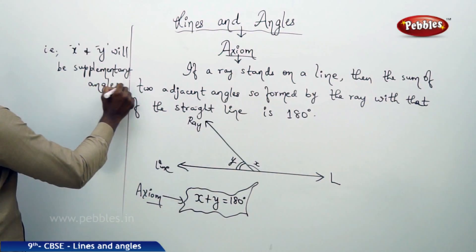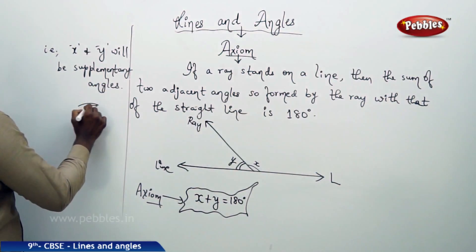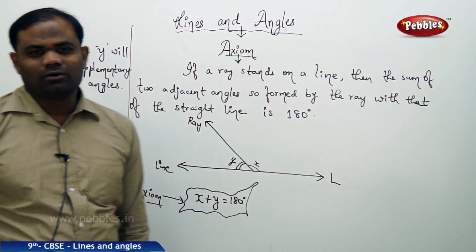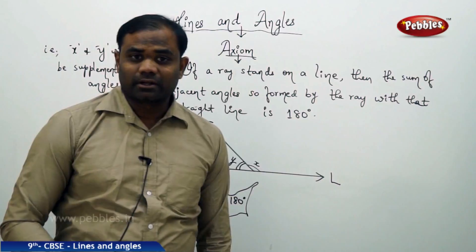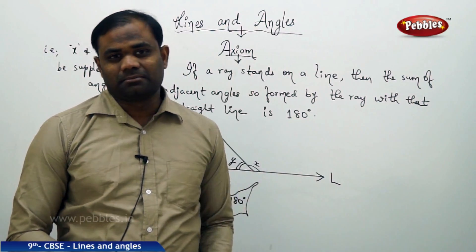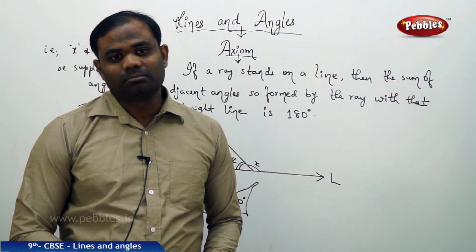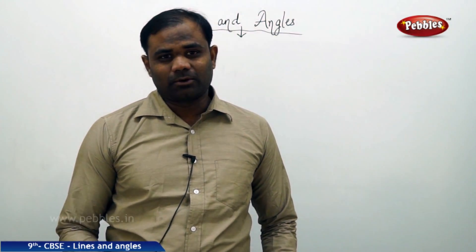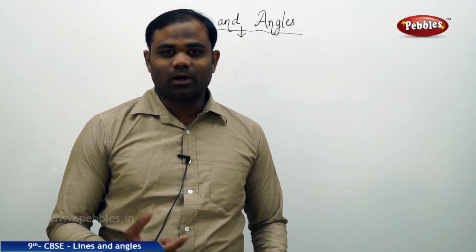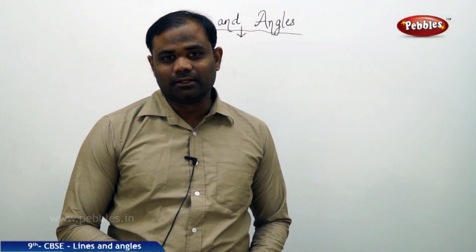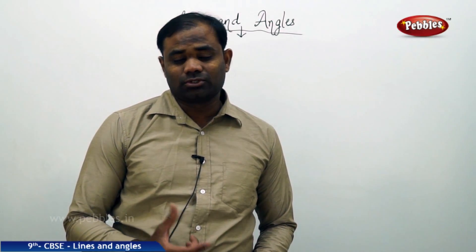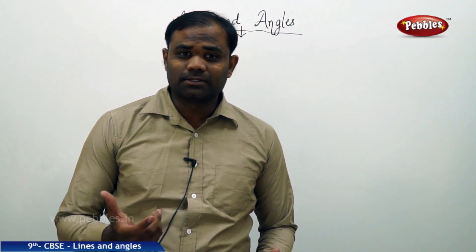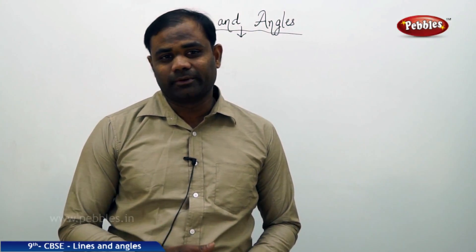That is, x and y will be supplementary angles — this is how we understand axiom 1 related to plane geometry. Now that we have discussed axiom 1, let us see axiom 2, which also relates to the properties of plane geometry.